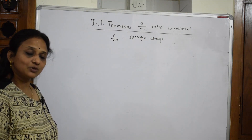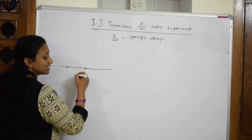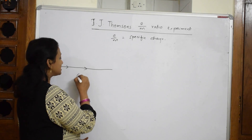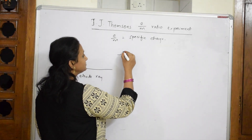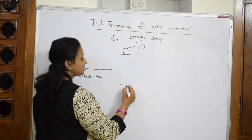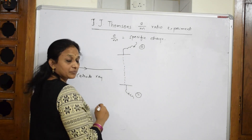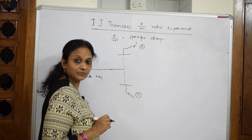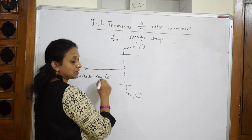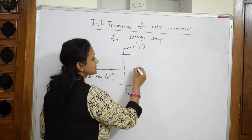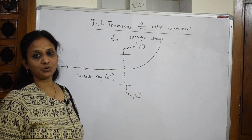Whenever we study cathode rays, they travel in a straight line in this direction. Now, when you place this cathode ray with two external circuits — one positive terminal and one negative terminal — when the cathode ray hits the positive terminal point, it undergoes a deflection. Why? This is a positive terminal and the ray contains electrons. Negative and positive get attracted, so it takes a deflection in this direction. The path observed is a parabola.